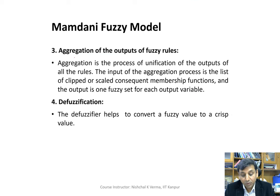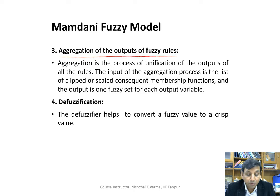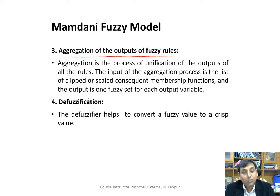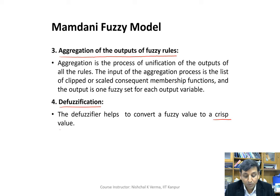In a nutshell, the fuzzy rule base helps the inference engine generate output corresponding to the fuzzy input fed to it. Every rule generates a certain output, we aggregate all the outputs corresponding to the fuzzy rules. In the Mamdani fuzzy model, the aggregated output is a fuzzy quantity, which is then defuzzified to generate a crisp output.